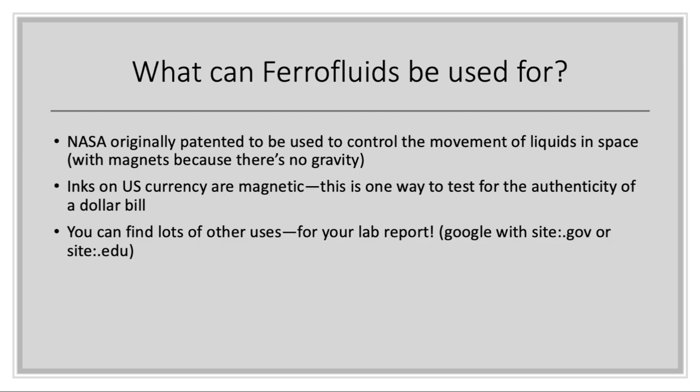You can also find a lot of other uses, and we'll ask you to do this in your lab report. But we want you to make sure that you are finding reputable sources of information. And so one recommendation is that you narrow your search to government or university websites. So you can use the site command just within the Google search bar. You can type site colon, and then whatever website you want to have. So for example, site colon dot gov, no spaces in there, will limit your search results to just government websites.